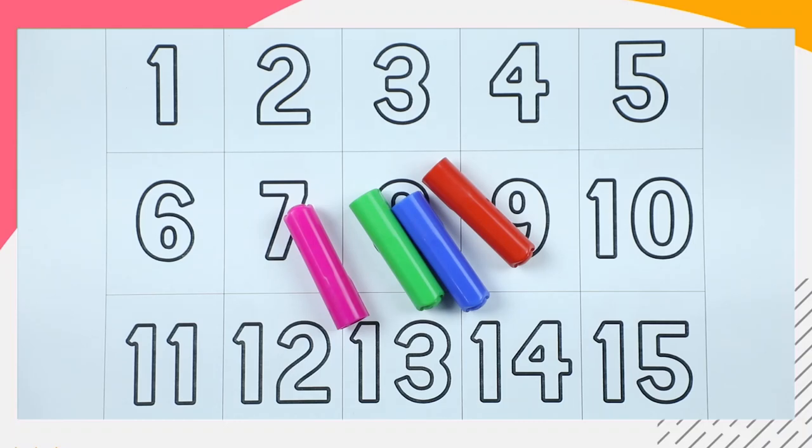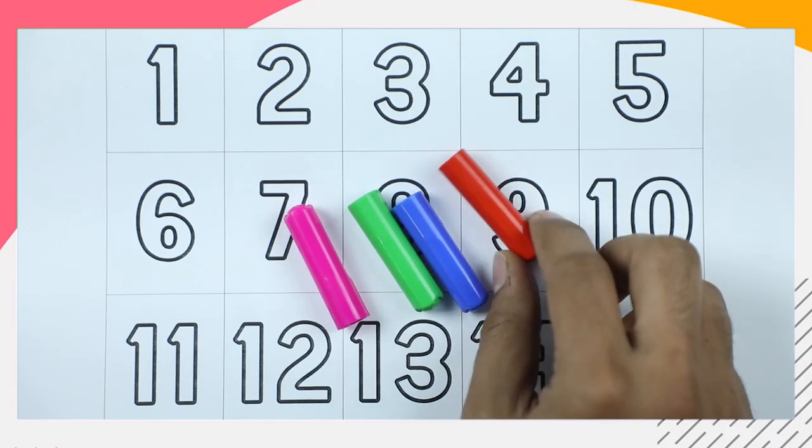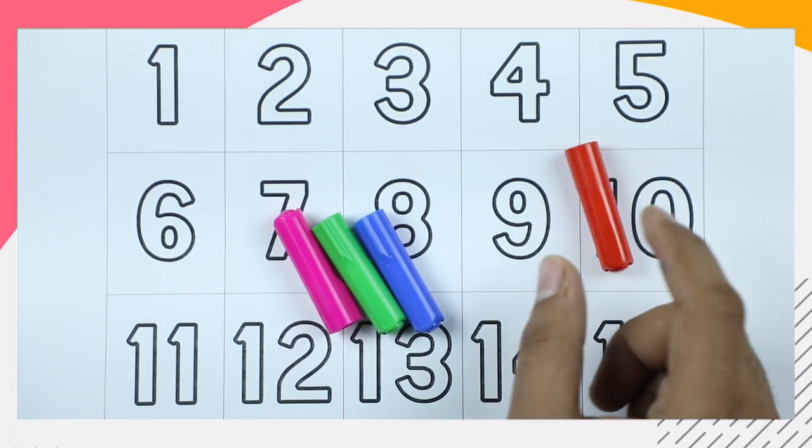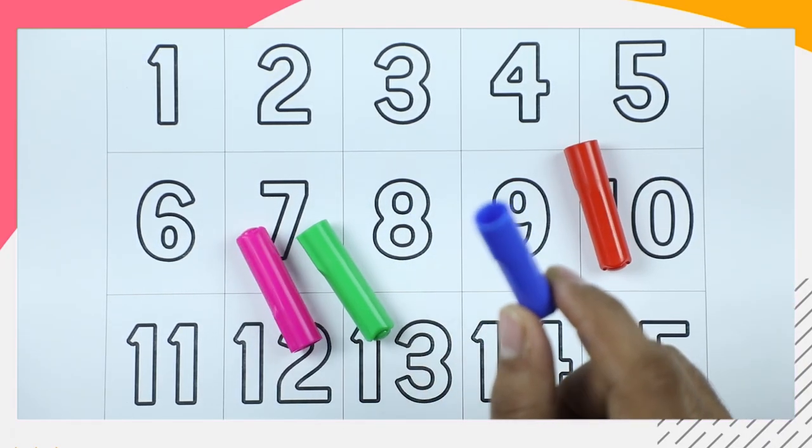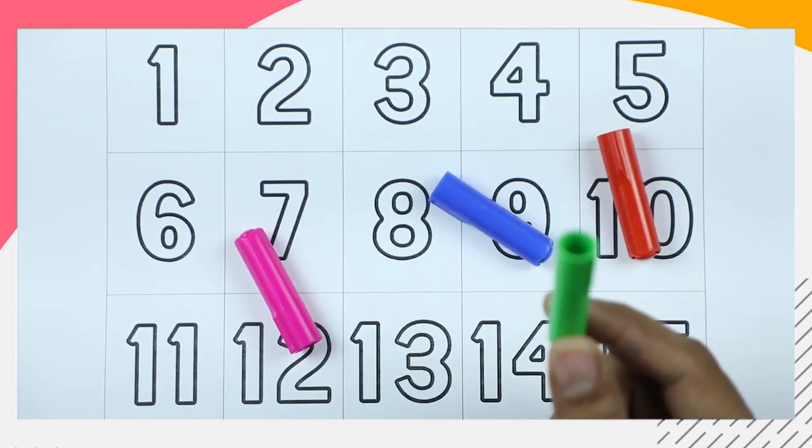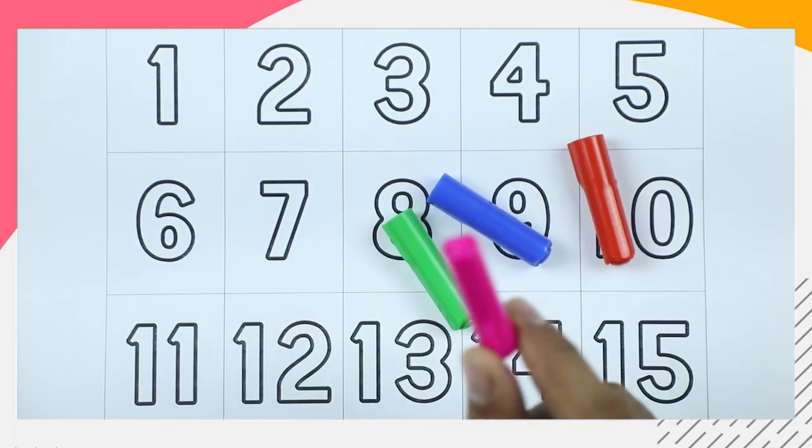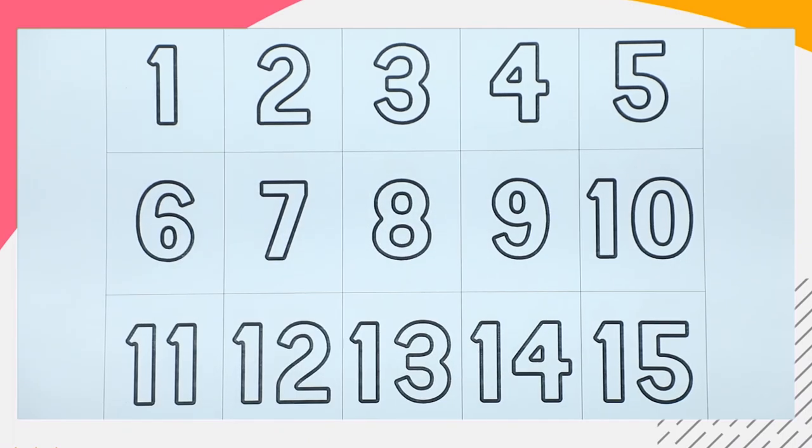Hello friends, today we will learn 1 to 15 numbers with some colors. Red color, blue color, green color, pink color. Let's start.